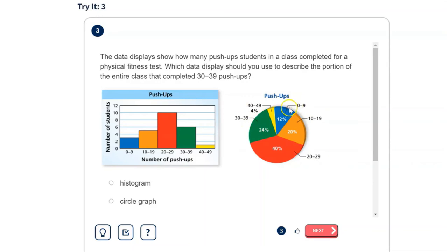Meaning, if we look at this first one, push-ups 0 to 9, 12% of the class did 0 to 9 push-ups, 20% of the class did 10 to 19 push-ups, 40% of the class did 20 to 29, 24% did 30 to 39, and 4% did 40 to 49 push-ups.